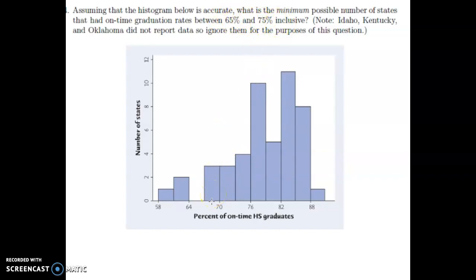But now we also want to think about this bar because it says, what's the minimum possible number of states? So it could be that these four states inside this bar are in between 73 and 75. In that case, they would be included in that range. But it could also be that those four states are, say, 75.9% or something, that they're above 75%, that they're outside of this little box here between 65 and 75.